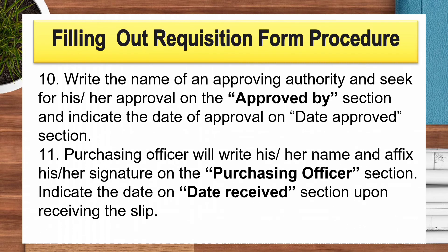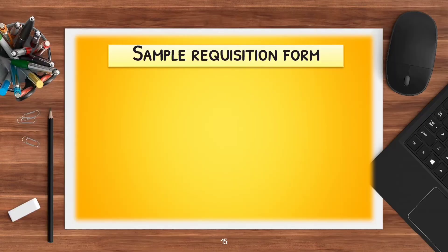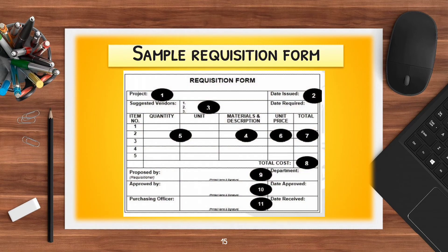And last, the purchasing officer will write his or her name and affix his or her signature on the purchasing officer section. Indicate the date on the date received section upon receiving the slip. This is a sample requisition form.